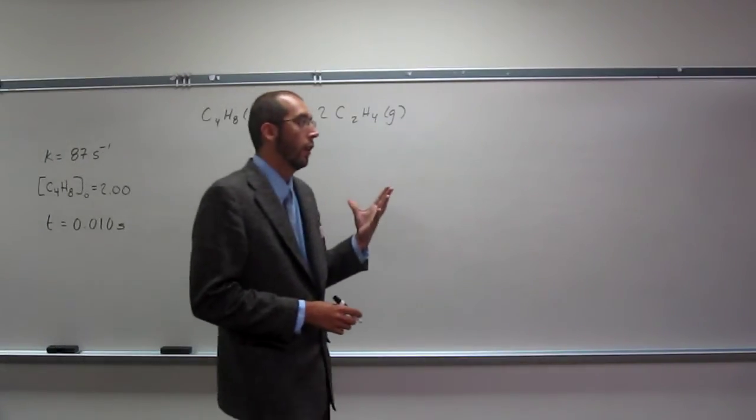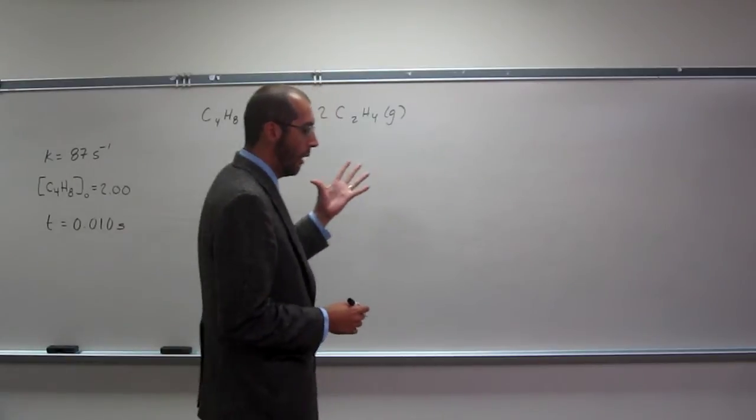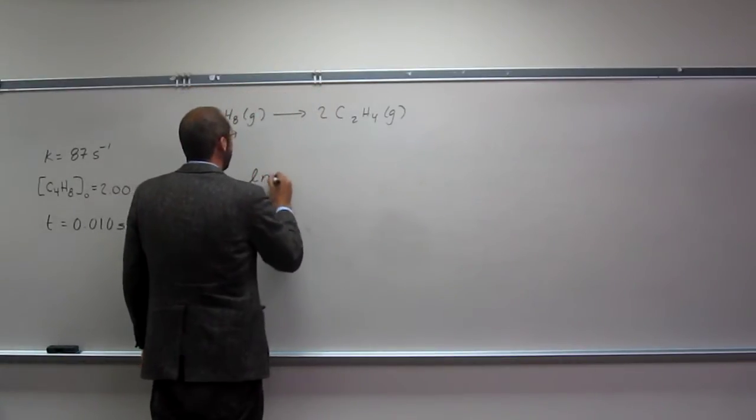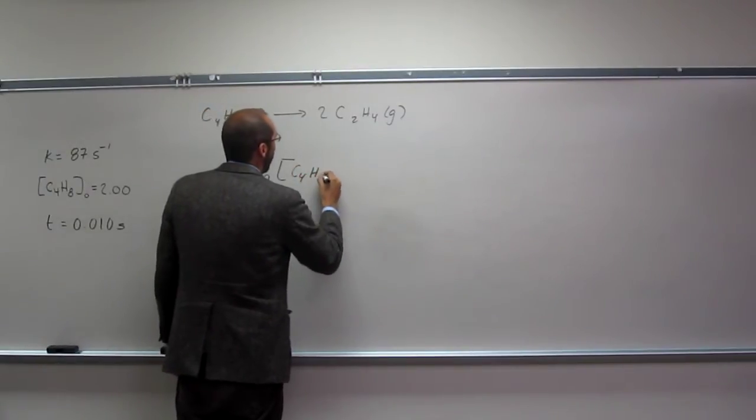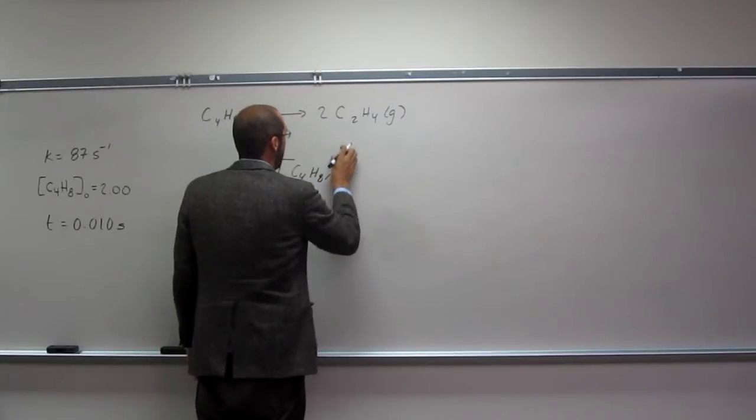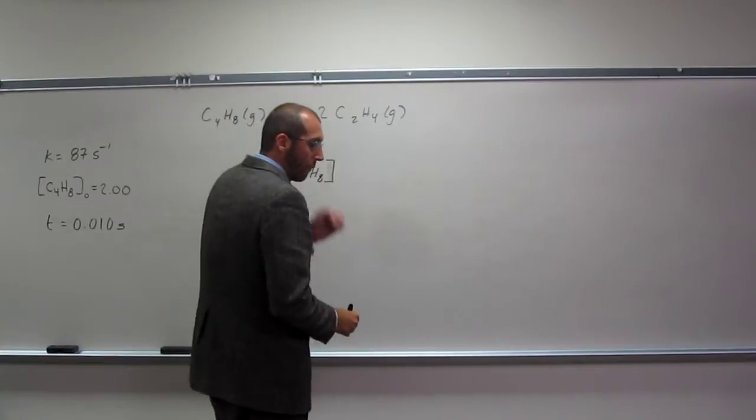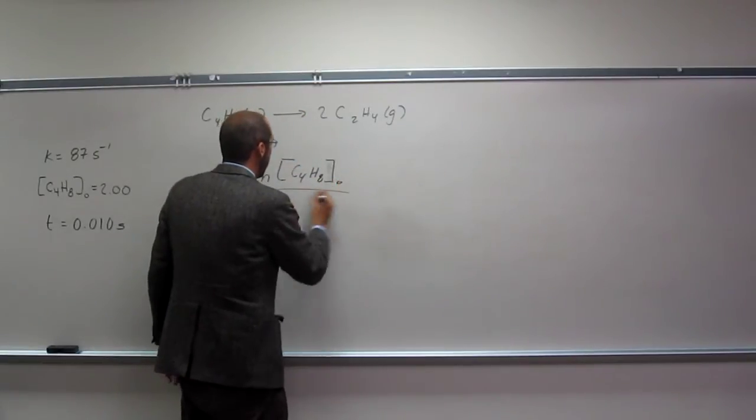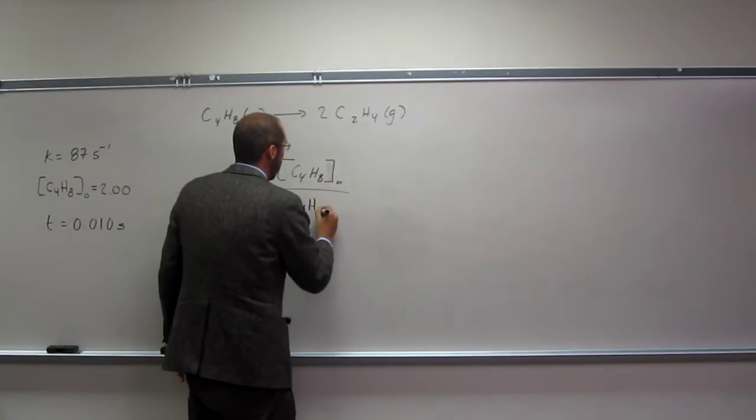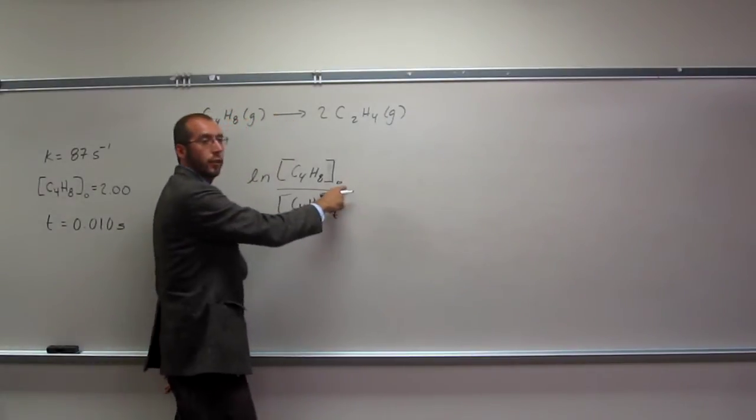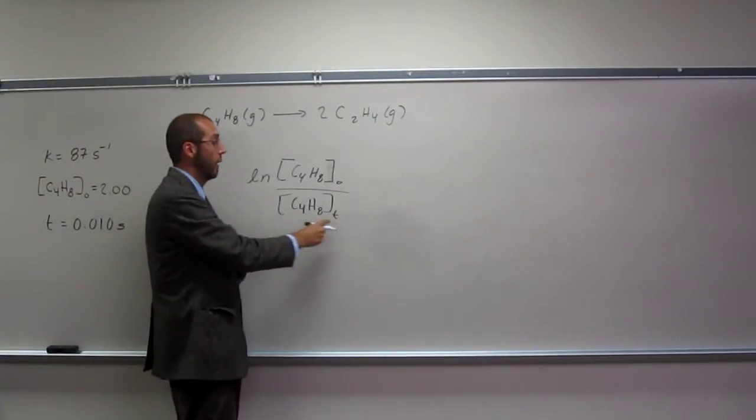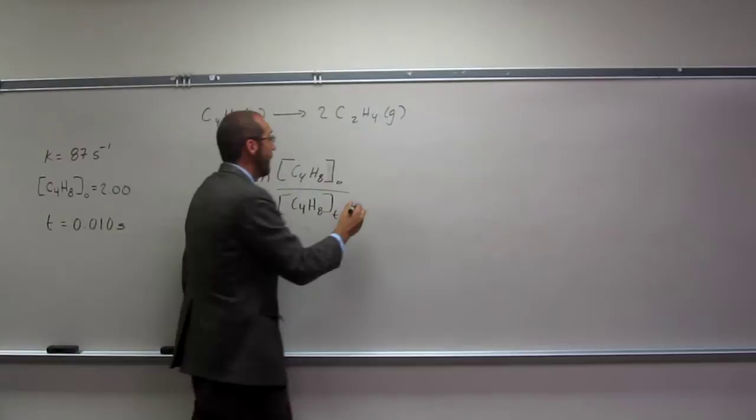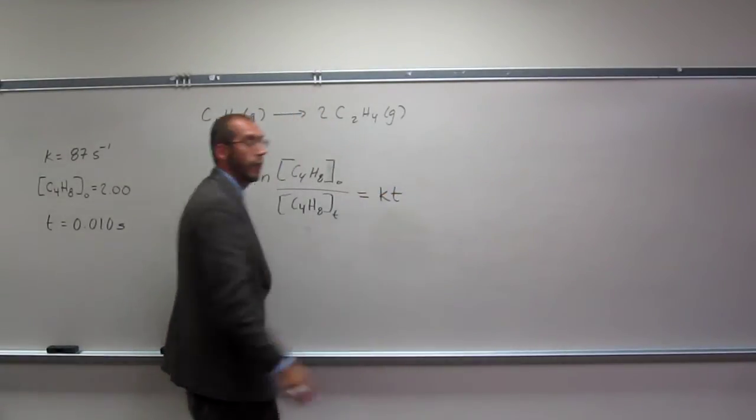The first-order rate law was ln of A, or in this case, C4H8, at the original time divided by cyclobutane, or the concentration of C4H8, at time T, that equals KT, like that.